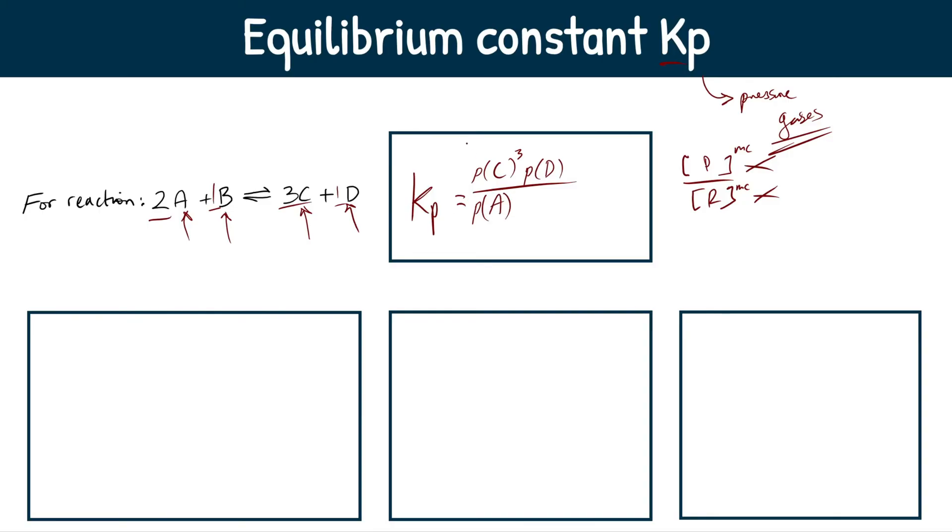Partial pressure of A. I'll go through what partial pressure is, don't freak out, to the power of 2, because that's our mole coefficient, multiplied by p, our partial pressure of B, the power of 1, but we can leave it off. And this would be your Kp expression, super simple.